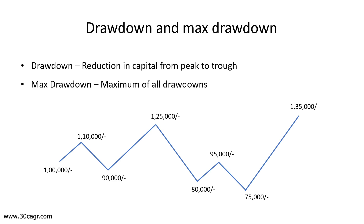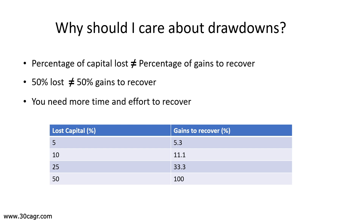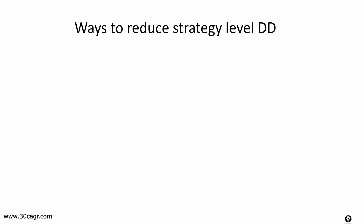A quick recap on what we learned in part one: drawdown is a reduction in capital from peak to trough. We compartmentalize all individual drawdowns and find the maximum — that's what we call maximum drawdown. For example, we take the peak of 1,25,000 and the trough of 75,000 and calculate maximum drawdown. We also saw that the amount of capital you lose is not equal to what you need to gain back — if you lose 50%, you need to gain 100% to recover. So it's always better to cut down losses in the first place.